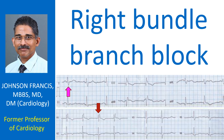The same pattern, if it occurs with a QRS duration of less than 120 ms, is generally designated as incomplete right bundle branch block. Mild ST segment depression and inverted T waves in anterior leads are associated with RBBB.